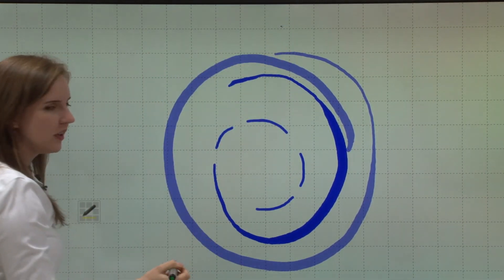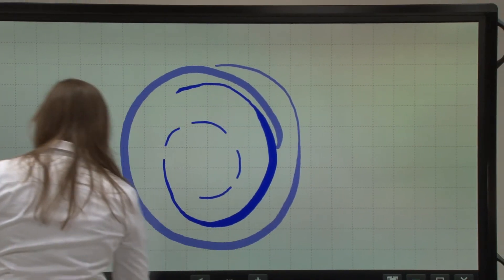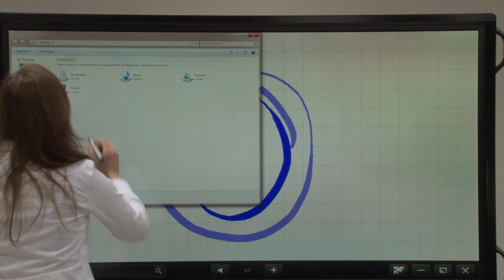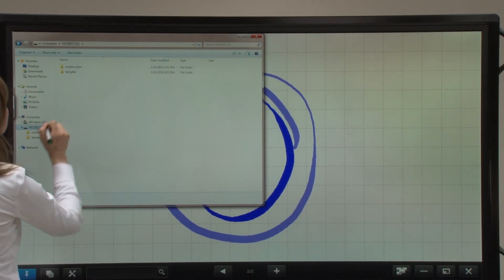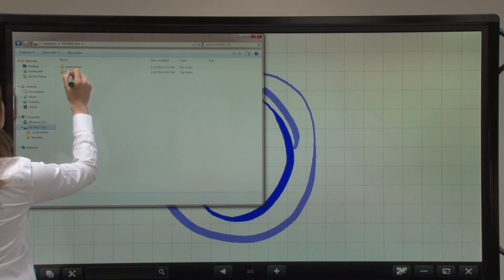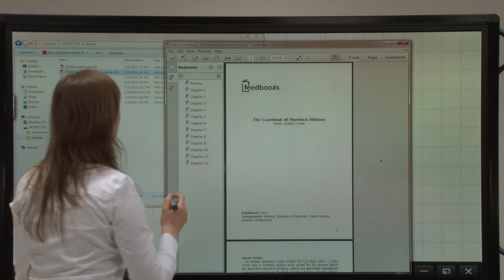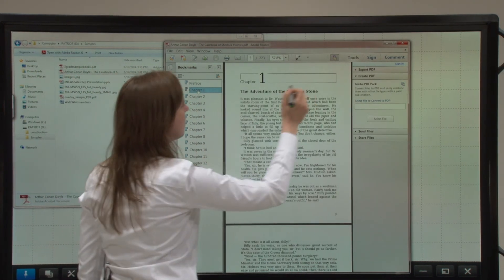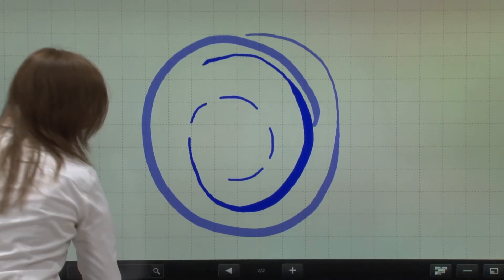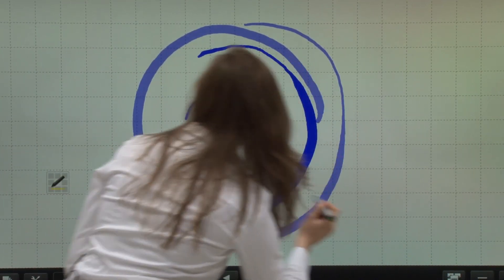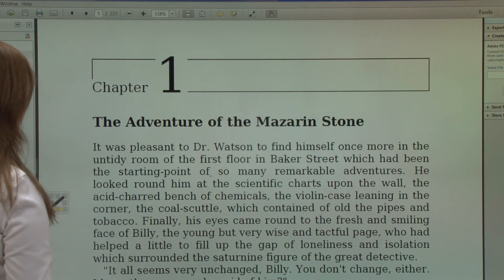Now if we switch to overlay mode, which we'll explain more in another video, I'll pull up a PDF from my computer, actually from my USB port, of a passage from Sherlock Holmes. Here is overlay mode, switching here.